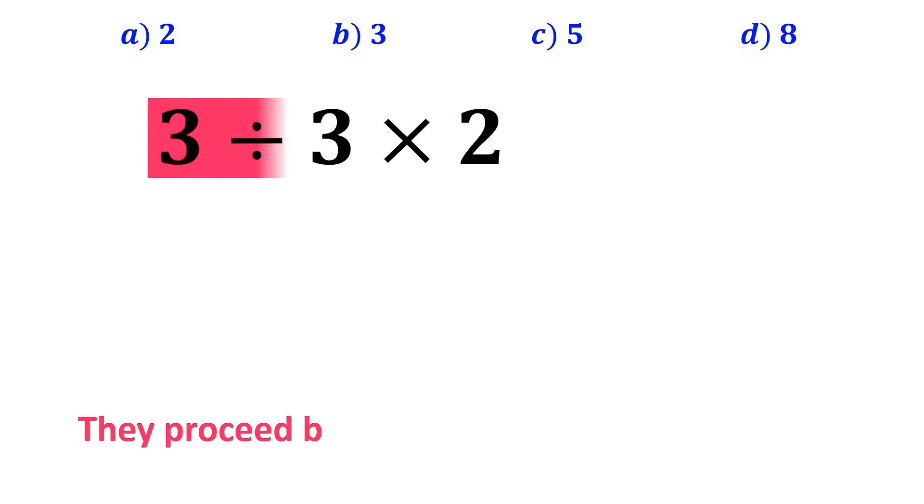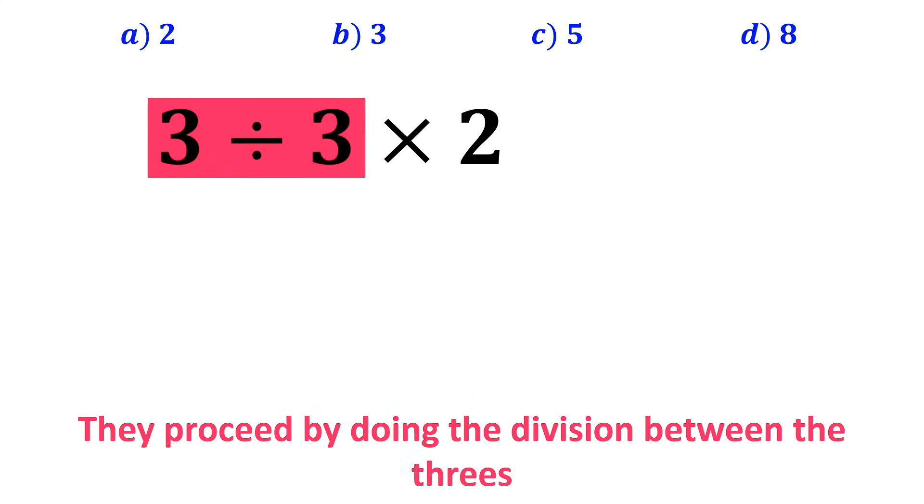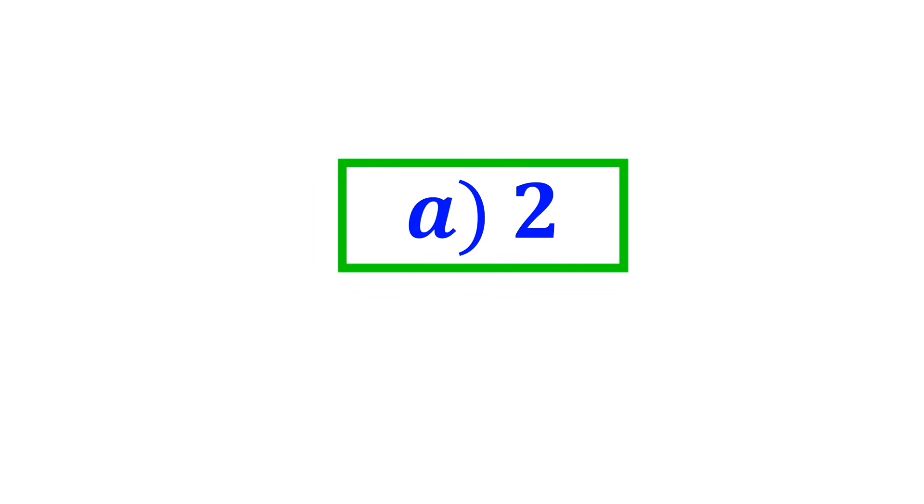Then they proceed by doing the division between the 3's, which gives them 1 times 2. And finally, they multiply 1 by 2, which ends up with the answer 2. And without any hesitation, they quickly say that option A is the correct answer to this question.